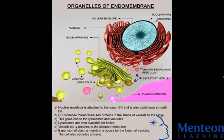The nuclear envelope is a membrane that has two layers and it encompasses the contents of the nucleus. The endoplasmic reticulum, or ER, is a synthesis and transport organelle. It branches into the cytoplasm in plant and animal cells.